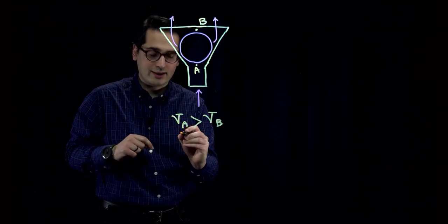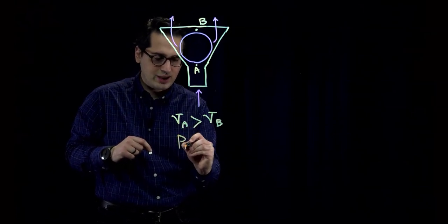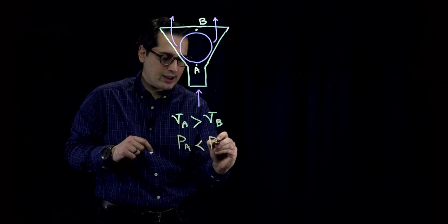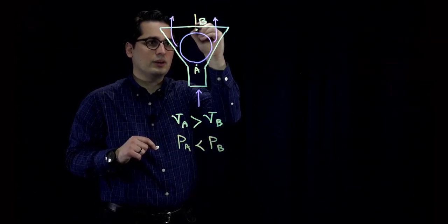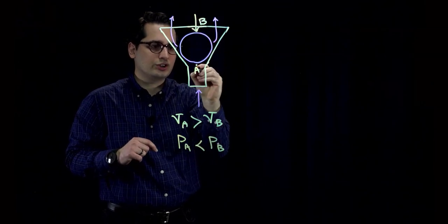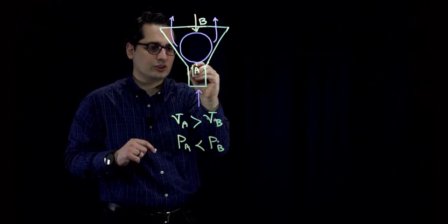So I can tell you that pressure at point A must be less than pressure at point B. Now, if I want to show you that pressure at point B is like this, which is larger than pressure at point A, which is like this.